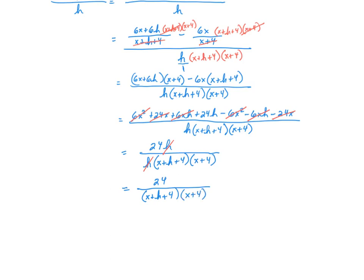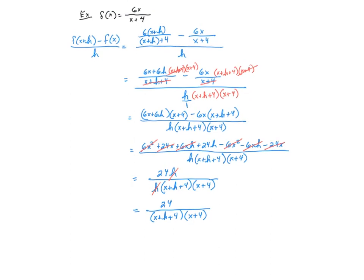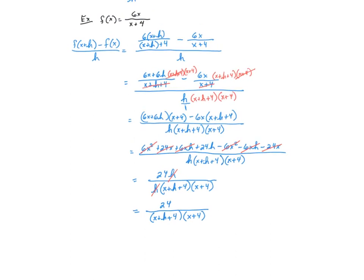So remember what we started with: we were looking for the difference quotient shown above, and our result is 24 over x plus h plus 4 times x plus 4. That's how you'd present your answer.